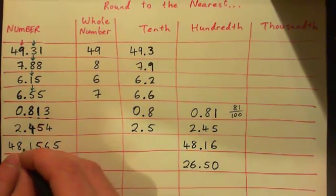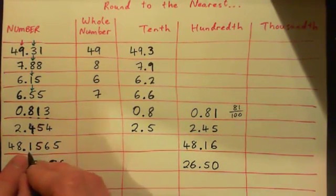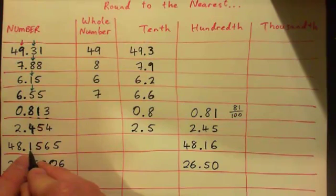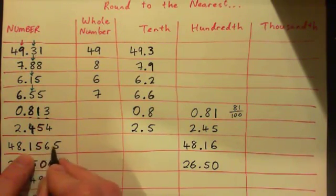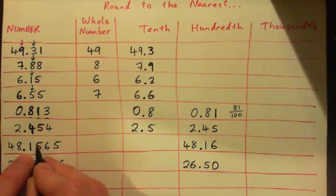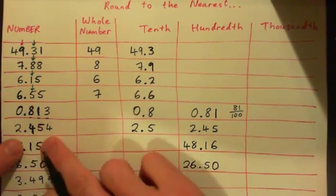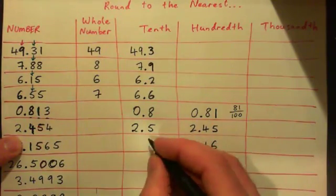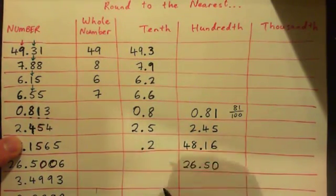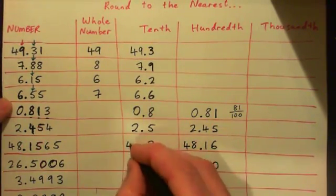Tenths are the digits after the decimal, so I'm interested in this one. I look to the right of the one, and to the right of one I see a five. If it's five or more, I've got to round up. Forget about the rest — the rest doesn't matter. You're just looking at the one and the five. So you round up, and that one becomes a two. So we've got 48.2.